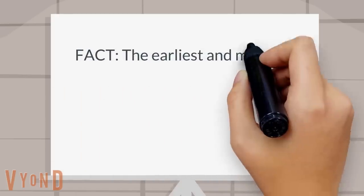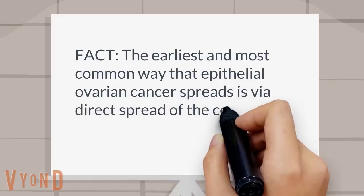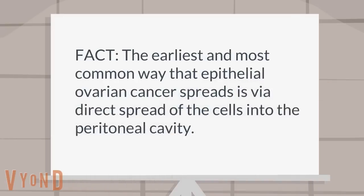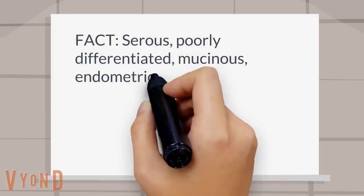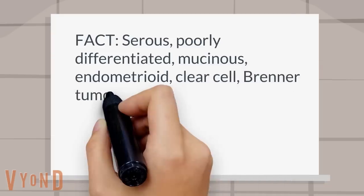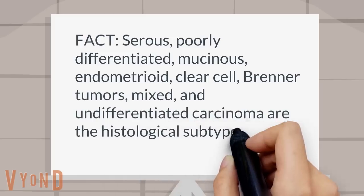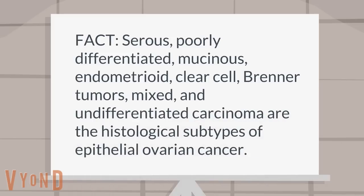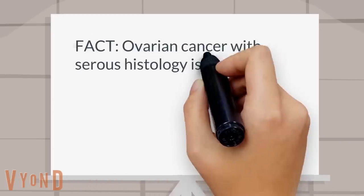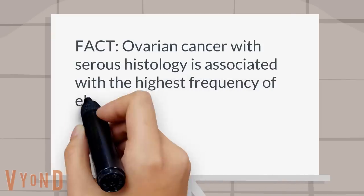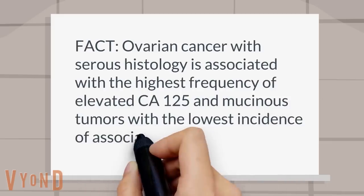Fact: The earliest and most common way that epithelial ovarian cancer spreads is via direct spread of the cells into the peritoneal cavity. Fact: Serous, poorly differentiated, mucinous, endometrioid, clear cell, Brenner, mixed, and undifferentiated carcinoma are the histological subtypes of epithelial ovarian cancer. Fact: Ovarian cancer with serous histology is associated with the highest frequency of elevated CA-125, and mucinous tumors with the lowest incidence.